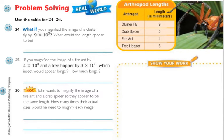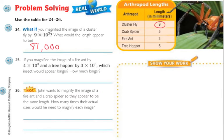Number 24. What if you magnify the image of a cluster fly by 9 times the third power of 10? What would the length be? Well, a cluster fly is 9. And 9 times 9 is 81. And if it's by the third power of 10, then that means I'm going to have 3 zeros. So it's going to be 81,000. And what is the length that I'm magnifying it in? Length in millimeters, so I need to make sure that I label it millimeters.